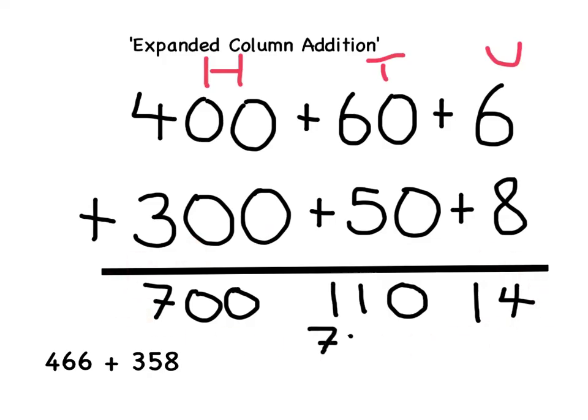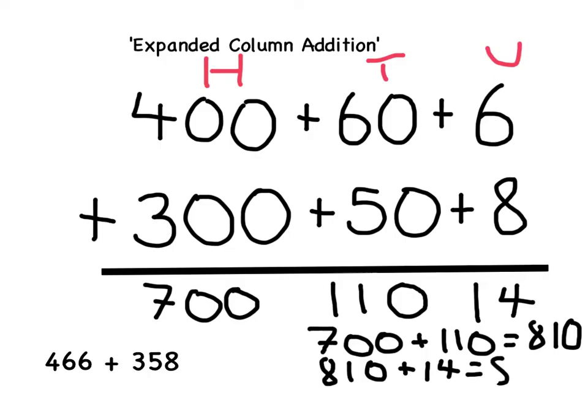So 700 add 110 equals 810. Then 810 add 14 equals 824.